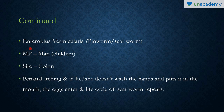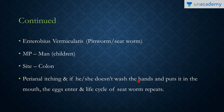Next is Enterobius vermicularis, the pin worm or seed worm — one of the most common round worms to cause infection in humans. It has only a single host, man, and is more common in children. It affects the colon. A characteristic feature is perianal itching, caused by the female worm migrating to the perianal region to lay eggs. If the person does not wash their hands and puts them in their mouth, the eggs re-enter and the life cycle repeats — this is known as auto-infection.